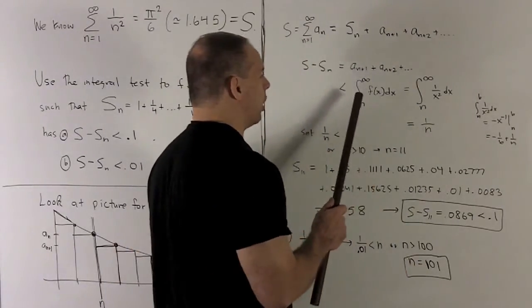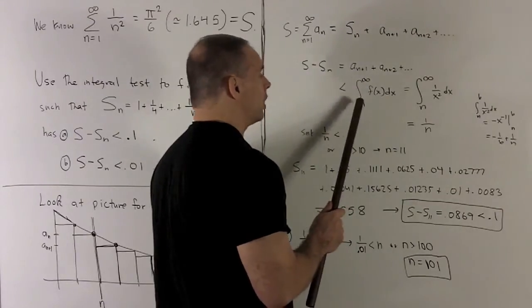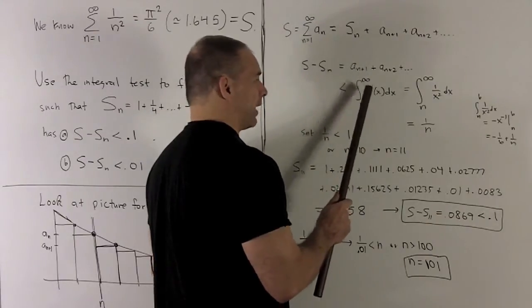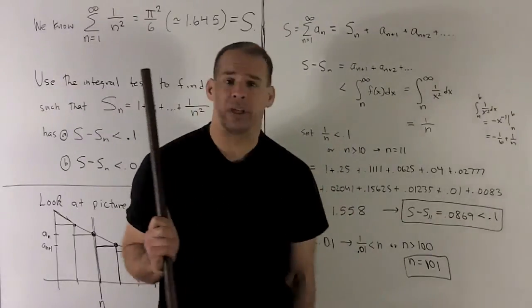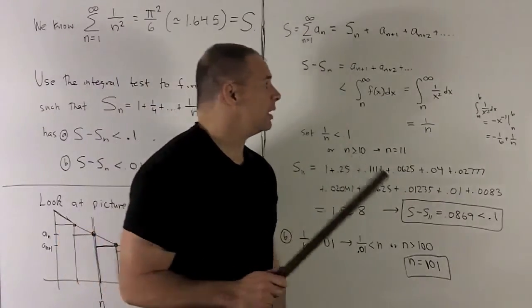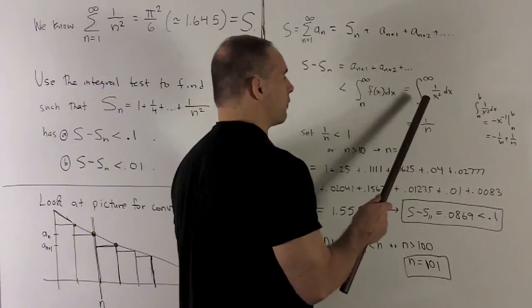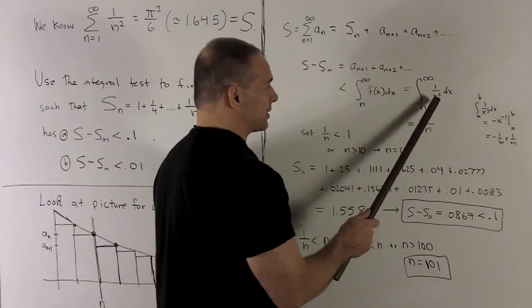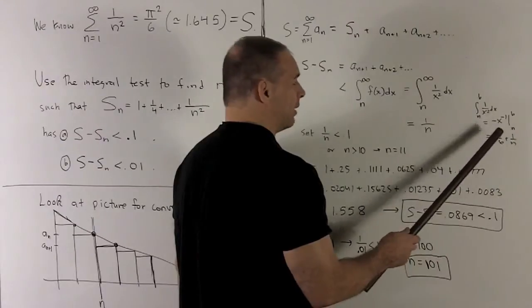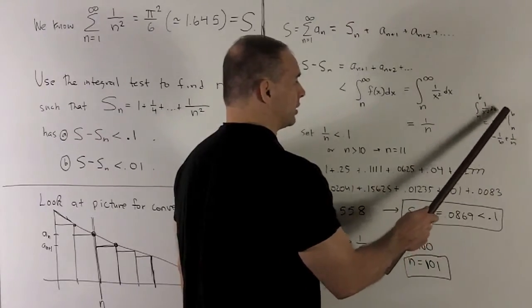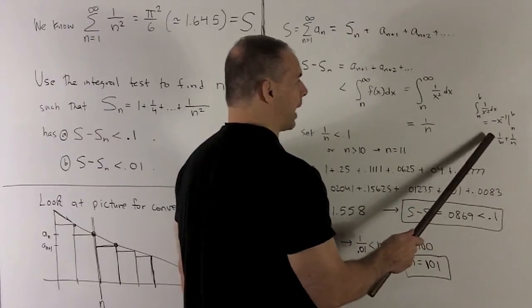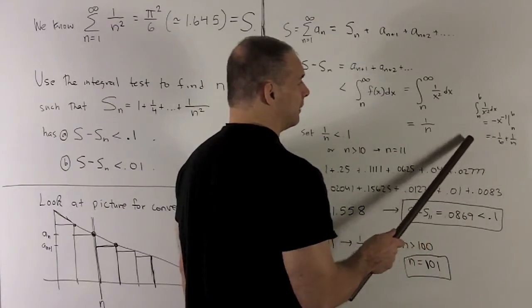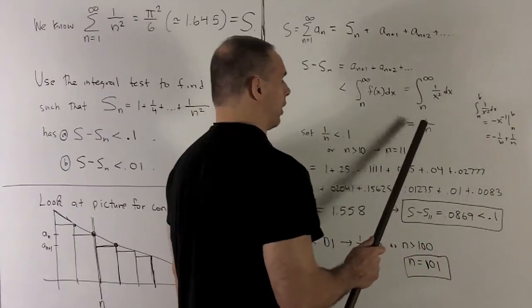And then that's going to be bounded below, as we noted before, the improper integral n to infinity of f of x dx. And then the case that we're looking at, we're looking at 1 over n squared. So I'm going to do this improper integral over 1 over x squared dx. When we work that out, we have x to the minus 2, so we add 1 and flip it over. And then when I put b and n in, take their difference, I'm going to have 1 over n minus 1 over b. Taking the limit as b goes out to infinity, this first term is going to drop out, leaving me with a 1 over n.